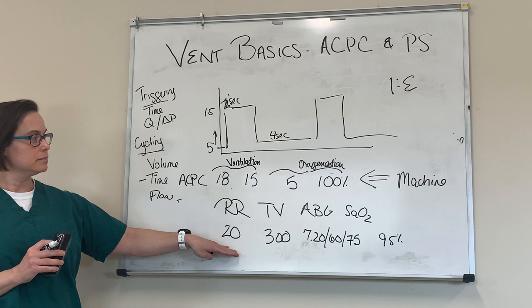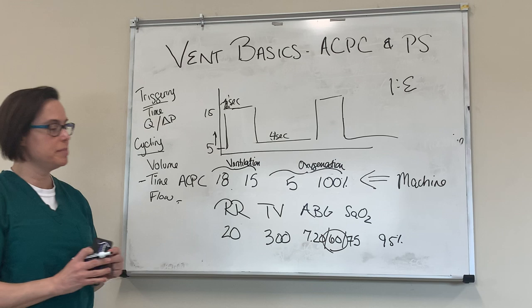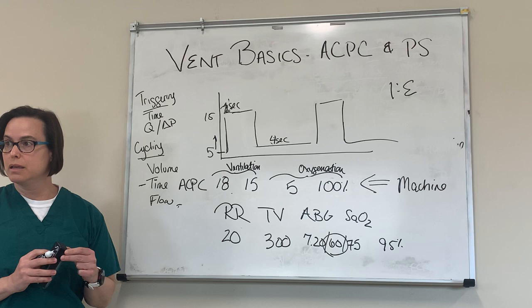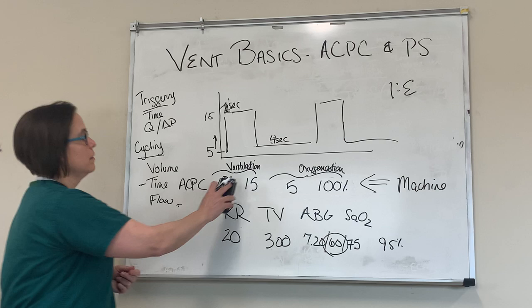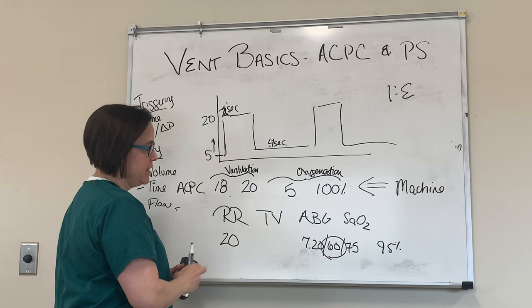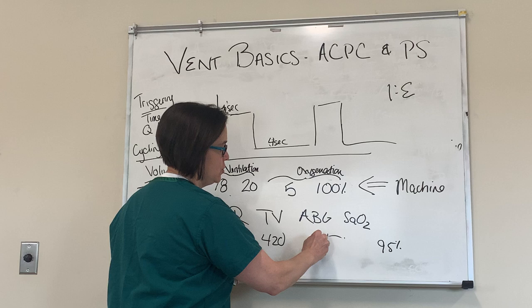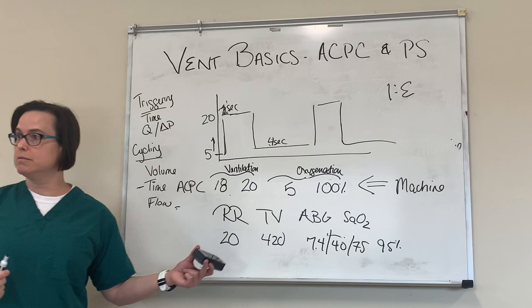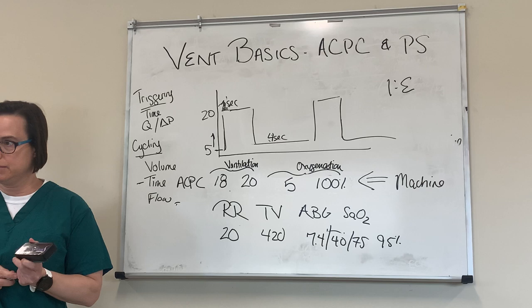Looking at the ABG, the CO2 is elevated — PCO2 is elevated — which suggests the patient isn't ventilating well. How do I fix that? In this mode, I would increase my inspiratory pressure to allow for a larger tidal volume. So I'm going to take that to an inspiratory pressure of 20. When you do that, the patient goes to a tidal volume of 420 and the ABG goes right back to 7.4/40/75. You fixed it. Those are the big things we manipulate in ACPC.